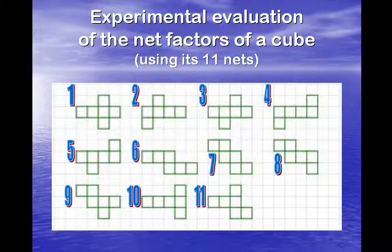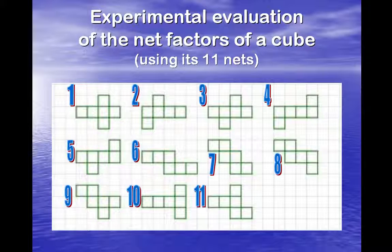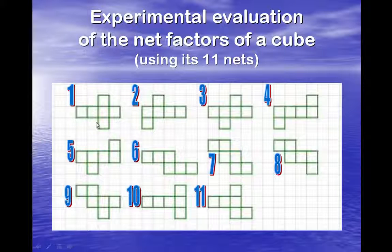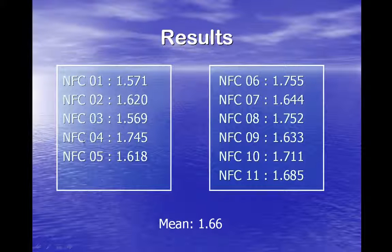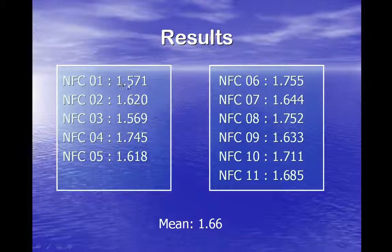The principal thing to do is probably to evaluate most of the values of the net factor. It was not presented in my paper, but we need to evaluate the net factors of all the nets of the cube. There are eleven nets — we know that. I did it and I have got all these values. The mean is 1.66, and you can see that all these values are concentrated between 1.57 and 1.75.